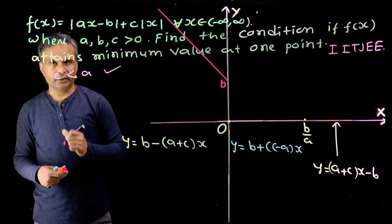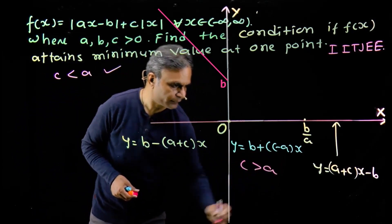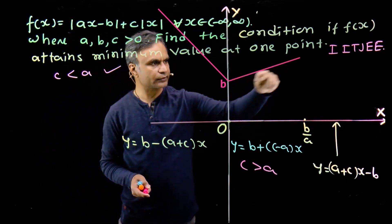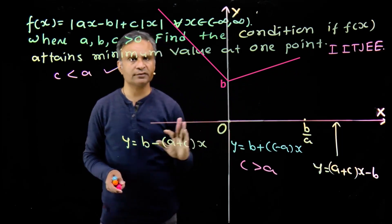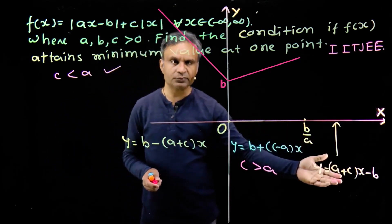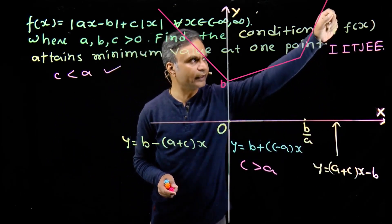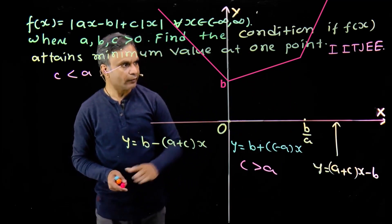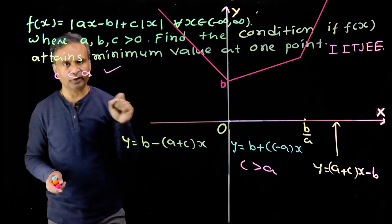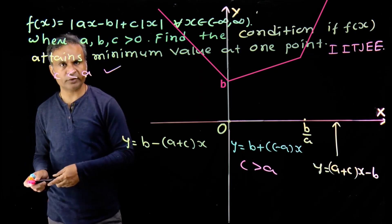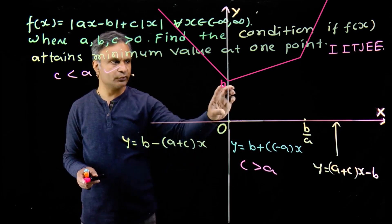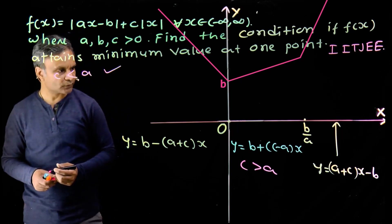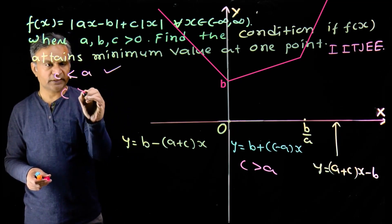Case 2: c greater than a, meaning slope is positive in the middle region. So in the region between zero and b upon a, the line segment is oriented upward. The slope for x greater than b upon a is always positive. In this case also, we have exactly one point of minima — at x equals zero. So c greater than a is also a required condition.